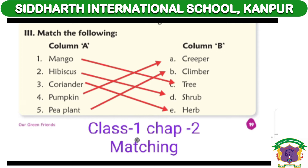Now we will write in Column A. First number: Mango (M-A-N-G-O). Second number: Hibiscus (H-I-B-I-S-C-U-S). Third number: Coriander (C-O-R-I-A-N-D-E-R).